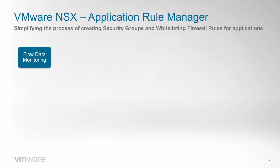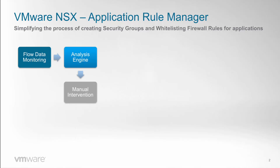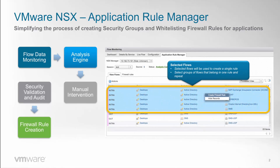It works by first gathering and monitoring flow data, which is then processed to replace IP addresses and ports by higher level constructs like VM name or services. Based on that info, an admin can easily create the right policy. If required, it can be double-checked by a security admin, and finally it can be pushed into the firewall table with just one click. Let's go and see it in action.